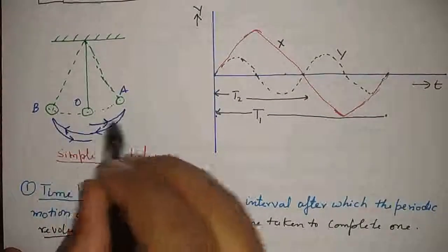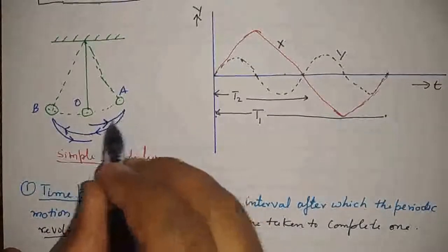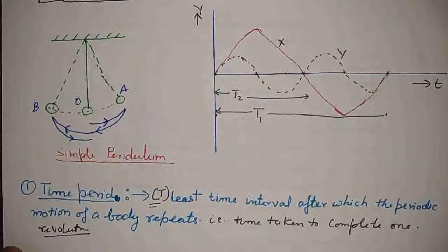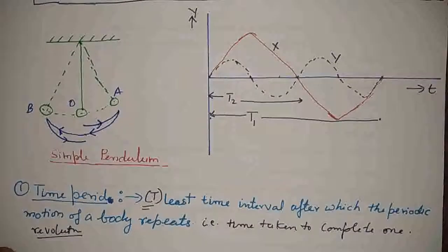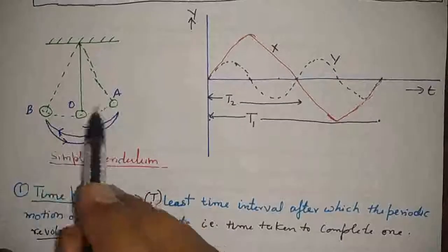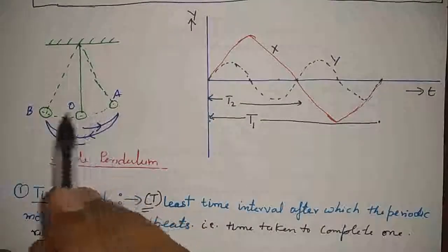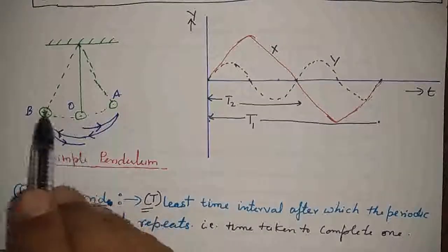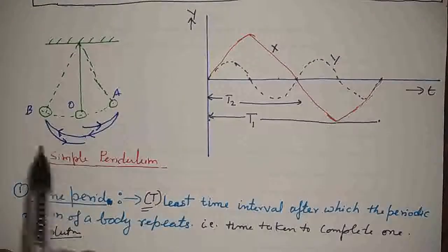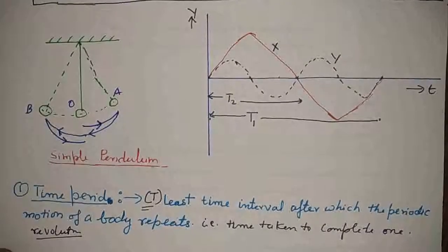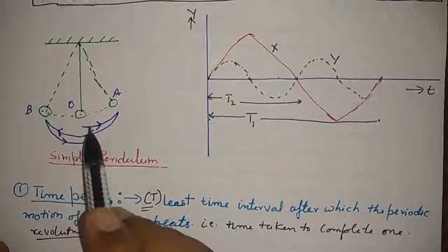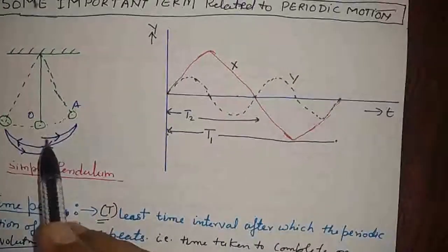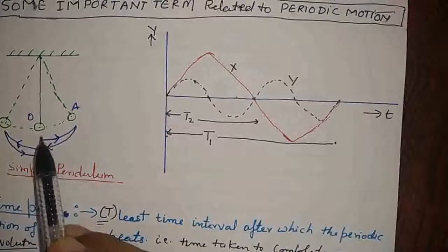Here this is from O to A, then A to B, then again B to A. The time period can be changed by changing the value of applied force due to which the pendulum oscillates. Since this motion is simple harmonic motion, if it is considered under constant amplitude and frequency.